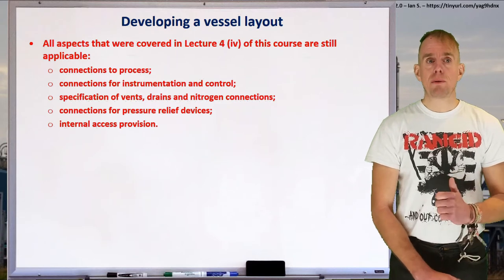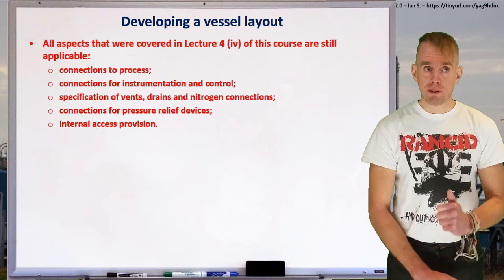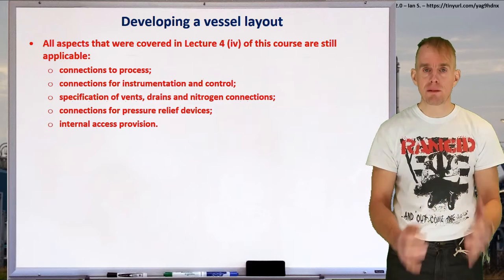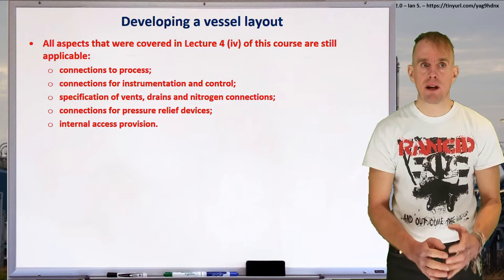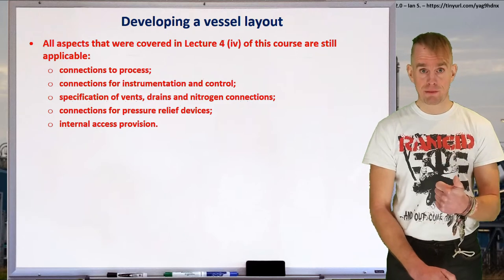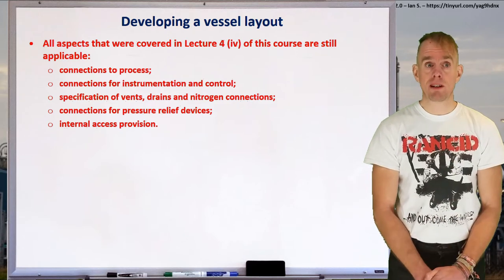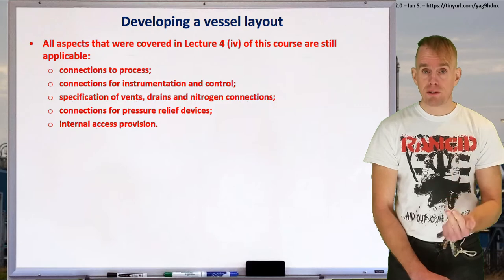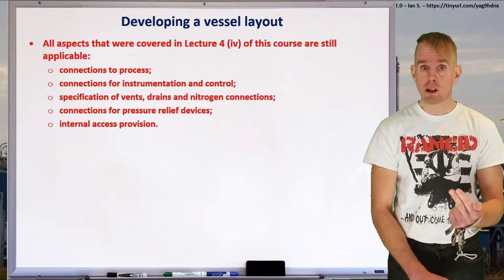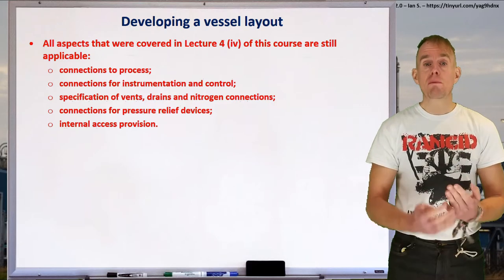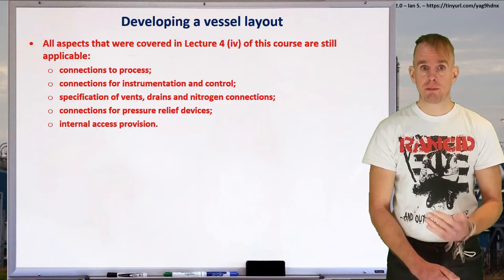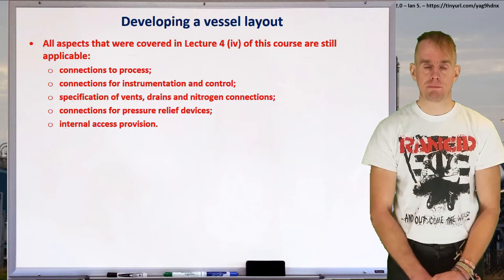A recap of key points from Lecture 4, Part 4 of this course, because they still apply to what we're doing now. When you're developing a vessel layout, don't forget the following: connections to the process; connections for instrumentation and control; the specification of vents, drains, and nitrogen connections; connections for pressure relief devices; and the provision of internal access. This is general to any pressure vessel.